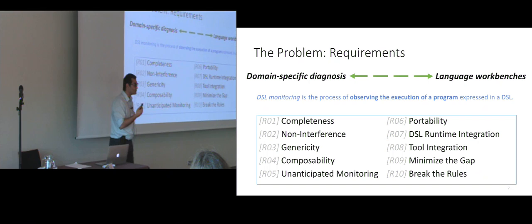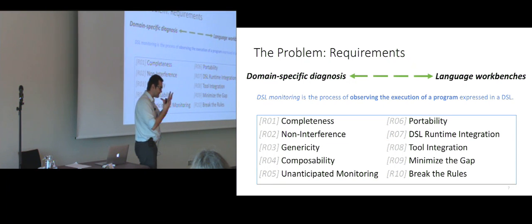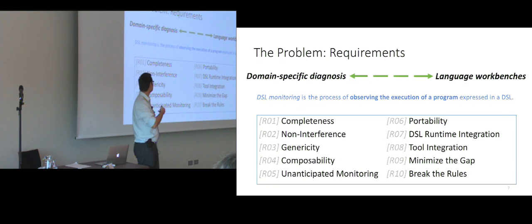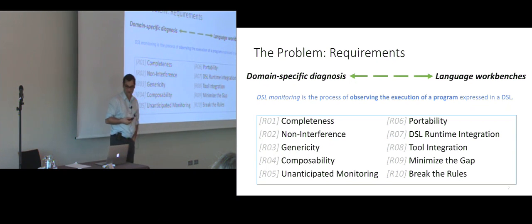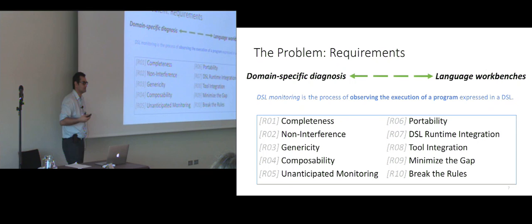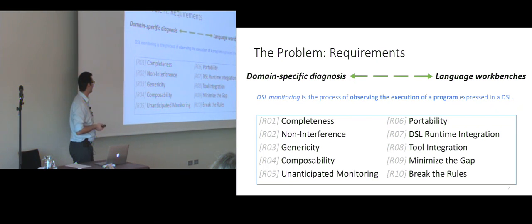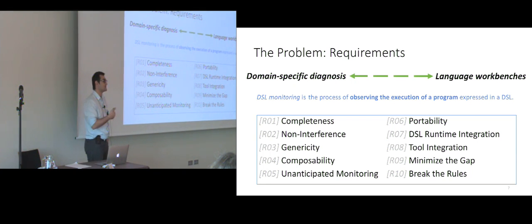In order to precisely define this connection, we extracted about ten requirements. We defined DSL monitoring as a process of observing the execution of a program expressed in the DSL — which we can find in the literature. The first requirement is completeness: we need to be able to observe everything that has meaning in our DSL.